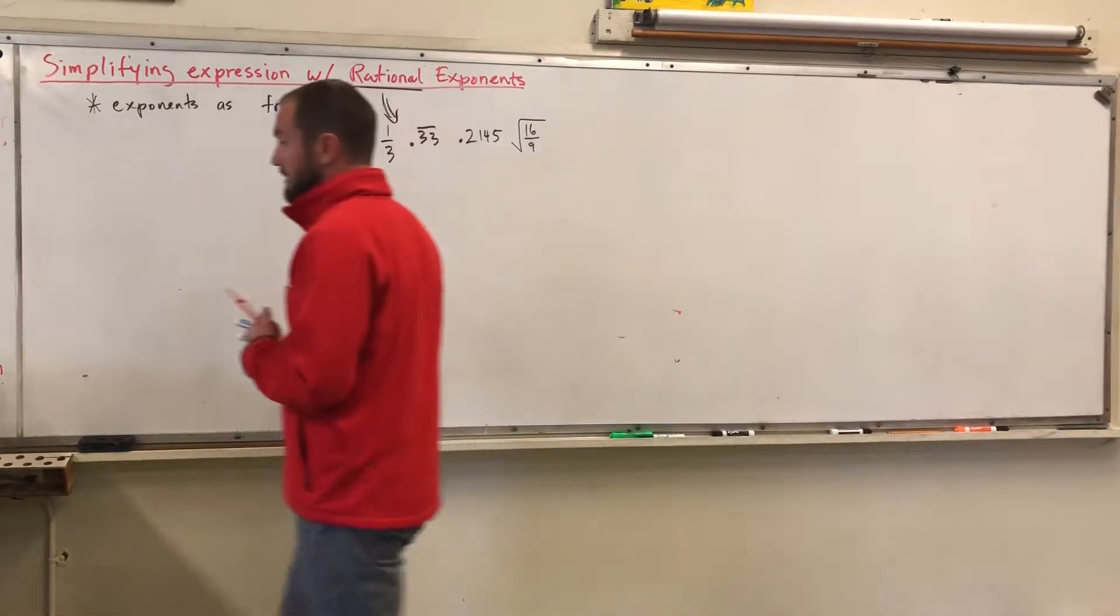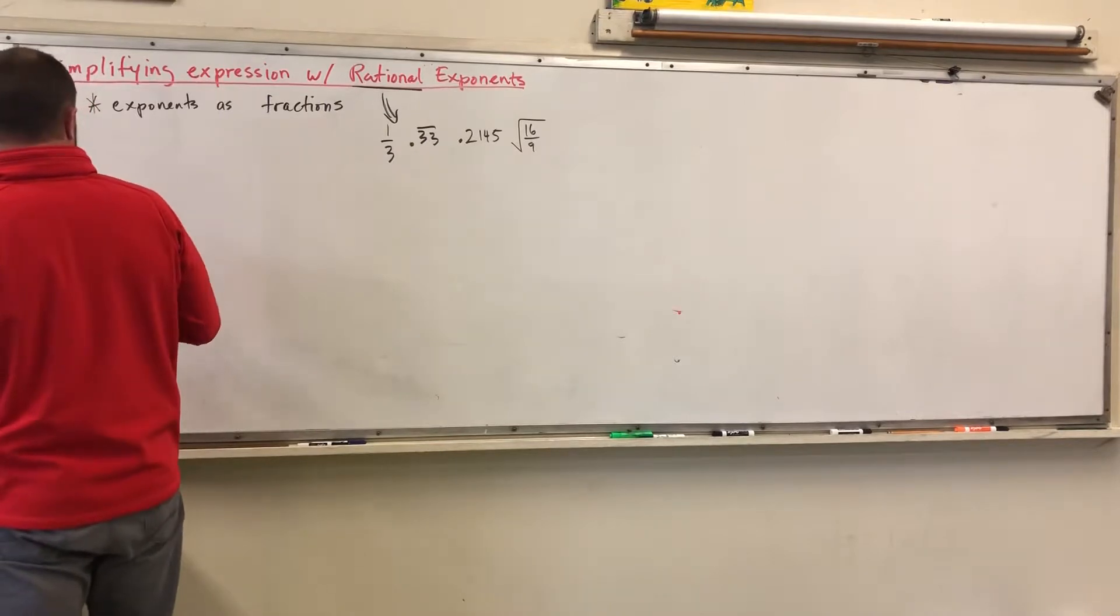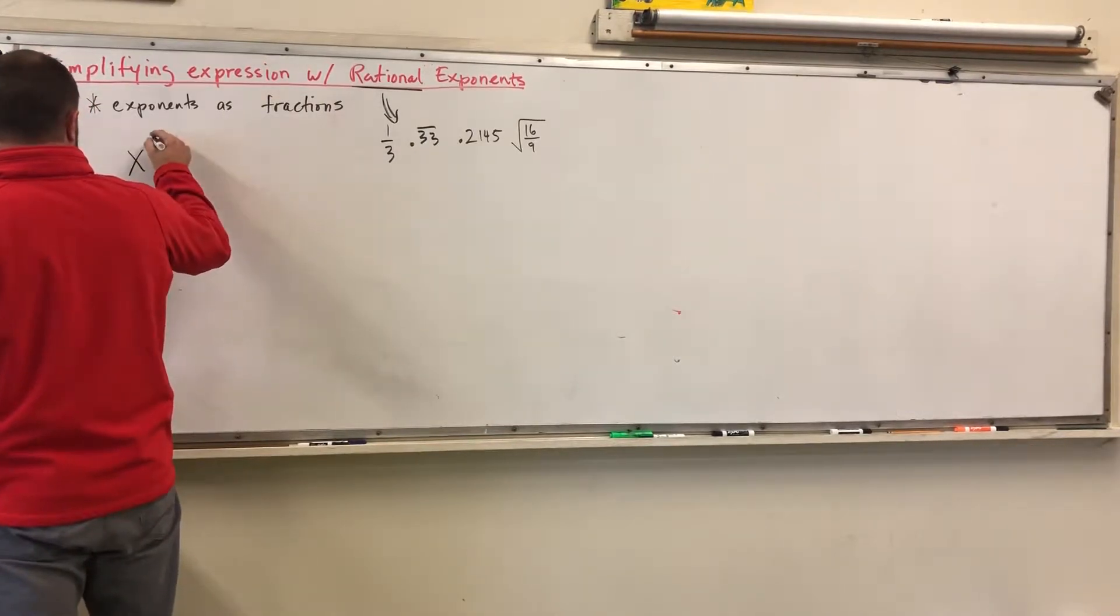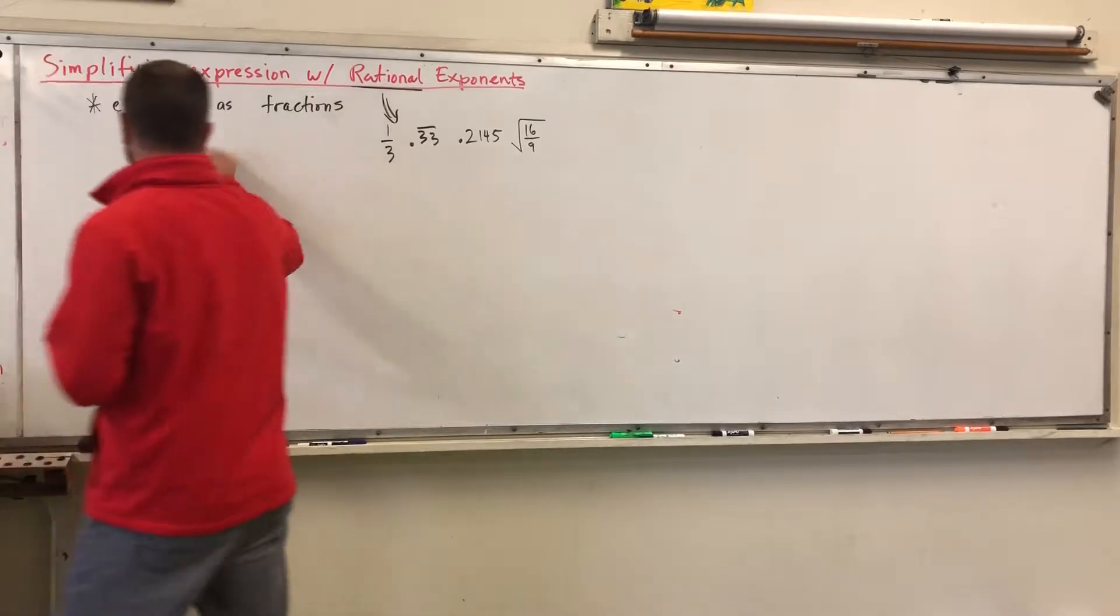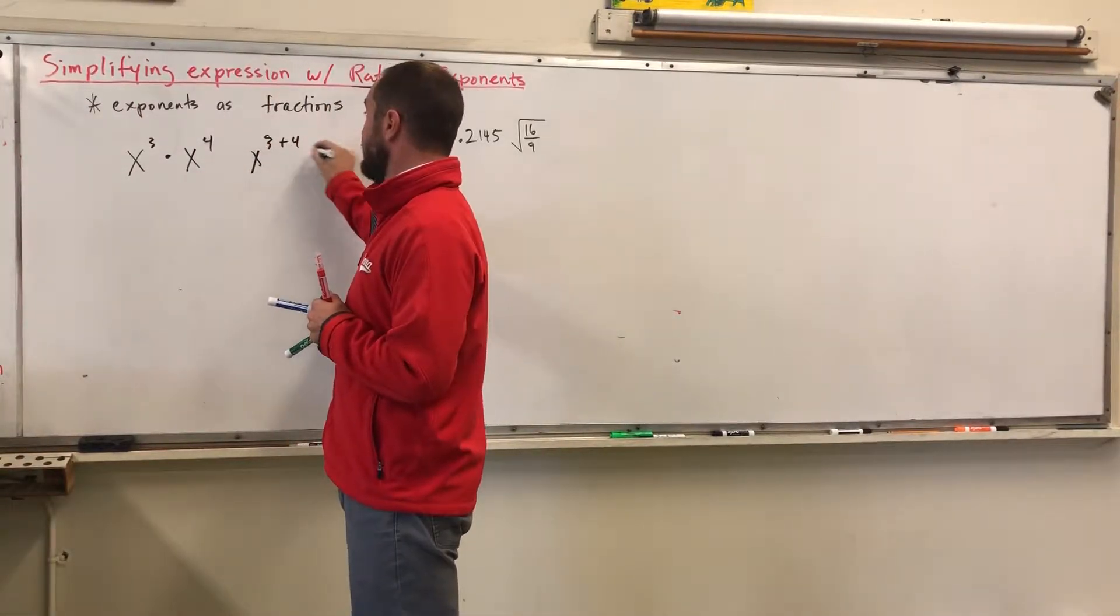Alright, so let's say you're given, again, we're looking at some of our basic rules, right? X to the third times X to the fourth, we're adding. 3 plus 4, 7.